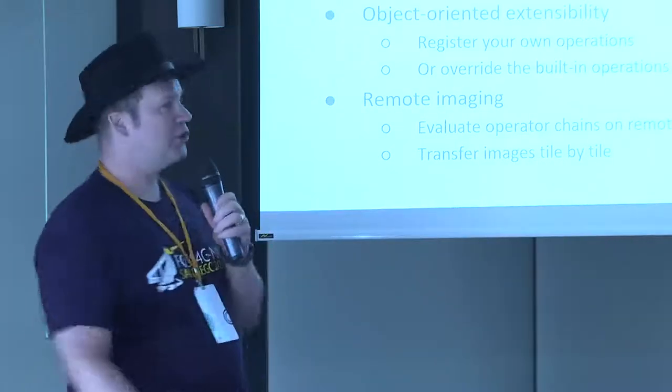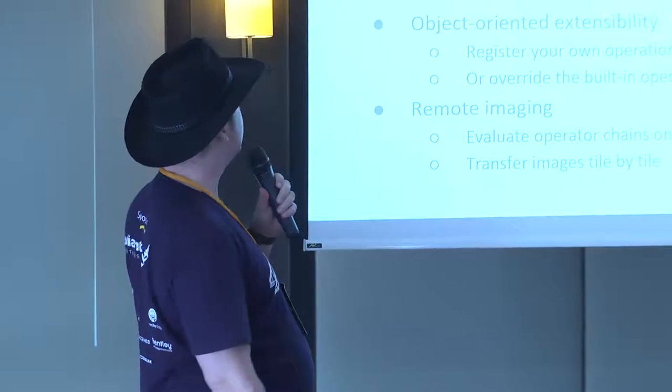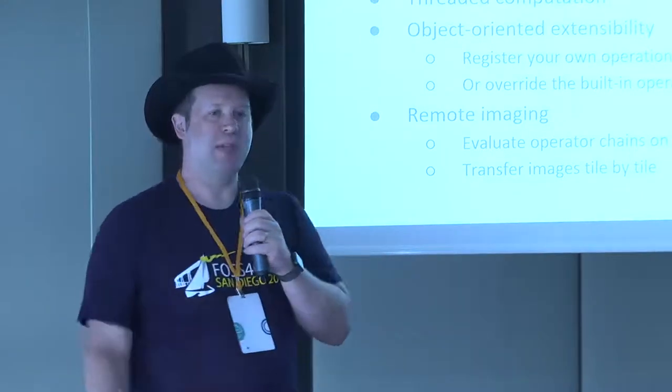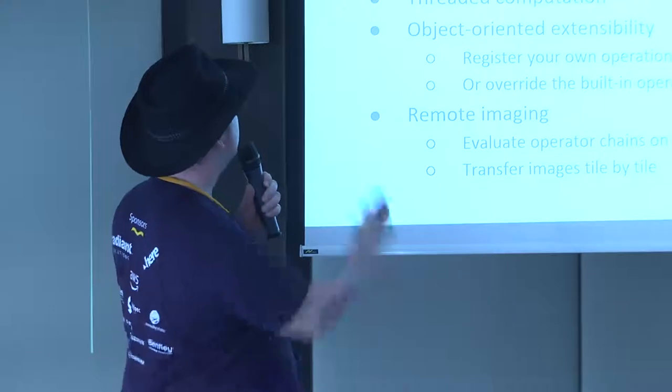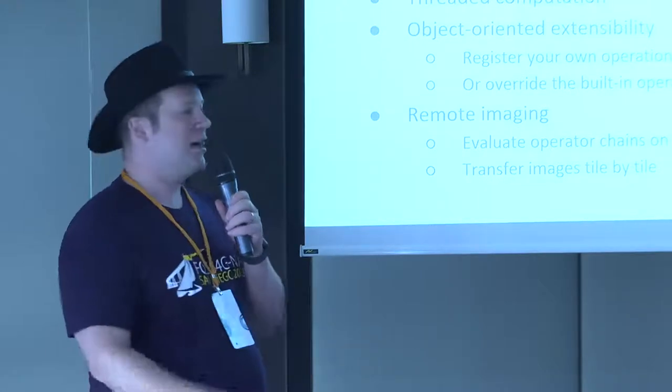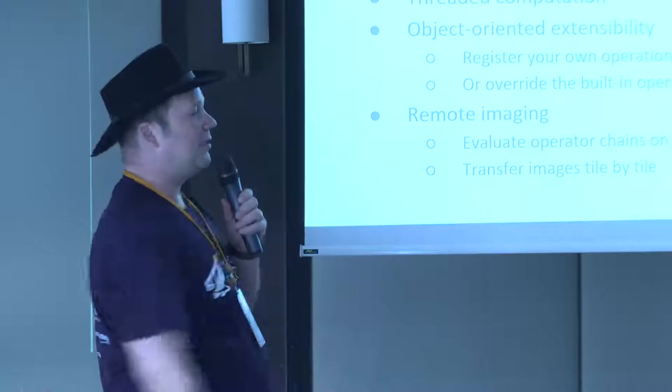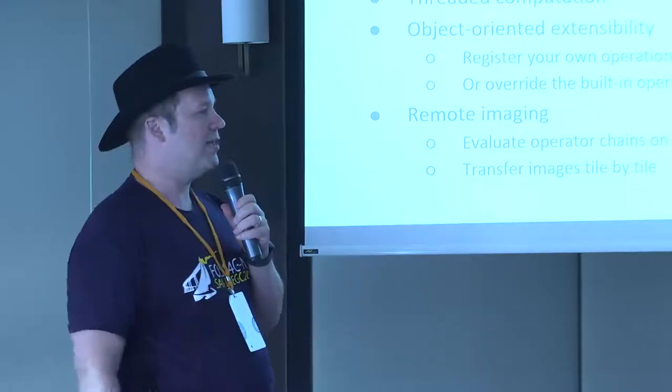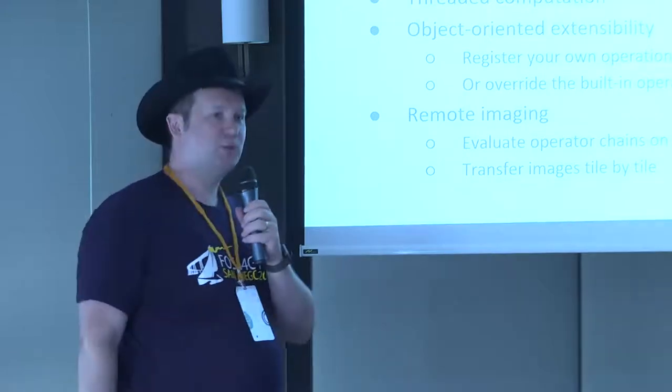I'd like to speak with you today about a project from the dawn of time. It's called Java Advanced Imaging, and this is a really fun project. It's a pure Java implementation — it's an image processing engine. It offers features that we use and enjoy from GeoServer. It helps us deal with massive quantities of raster data, deferred execution, a tiling computational model, threaded computation. We can extend it, use it for remote imaging, all kinds of great image processing features like region of interest, and so on.